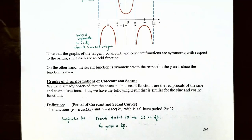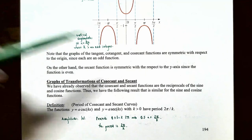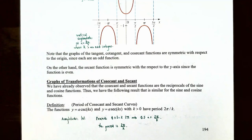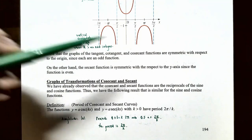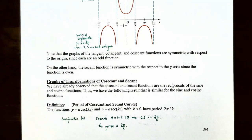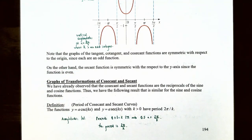Notice that the tangent, cotangent, and cosecant functions are symmetric with respect to the origin, which means they are odd functions. On the other hand, the secant function is symmetric with respect to the y-axis, so the secant function is an even function.